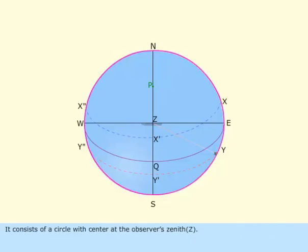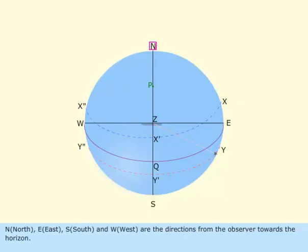It consists of a circle with center at the observer's zenith, Z. N (North), E (East), S (South), and W (West) are the directions from the observer towards the horizon.